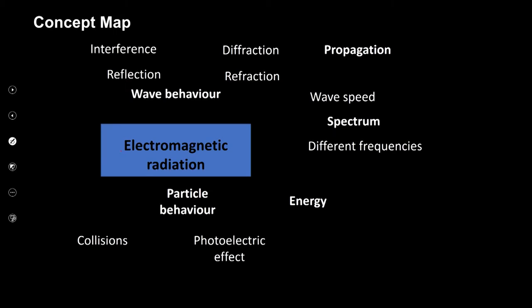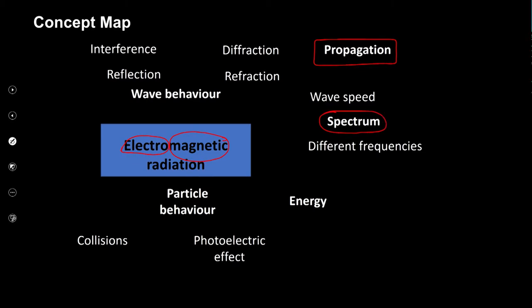As part of our investigation we're going to be looking at the electric and magnetic aspects of electromagnetic radiation. We're going to be linking it to how electromagnetic radiation propagates from one place to another, and what different types of electromagnetic radiation we find in the spectrum. But before we get into any of that, we first need to understand electromagnetic radiation in a little bit more detail.